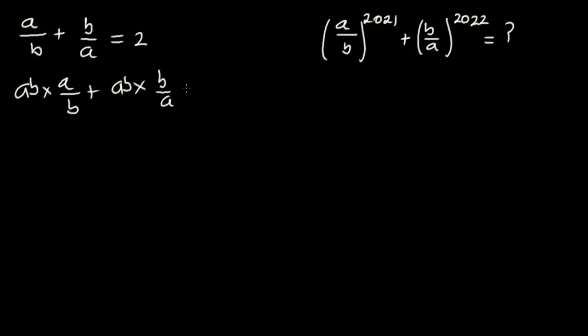Now from here, b will cancel out b, so a times a gives a squared. Plus, a will cancel out a, and b times b gives b squared. So this will be equal to 2ab.